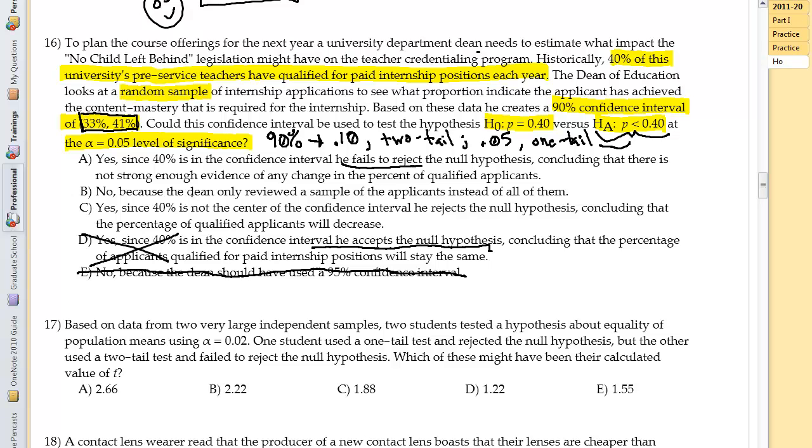So let's look at C. Yes, since 40%, could this confidence interval be used to test the hypothesis? Yes, absolutely this interval could be used. So B, no, is going to be crap. Yes, since 40% is not in the center of the confidence interval, he rejects the null hypothesis. No, no, no, no.